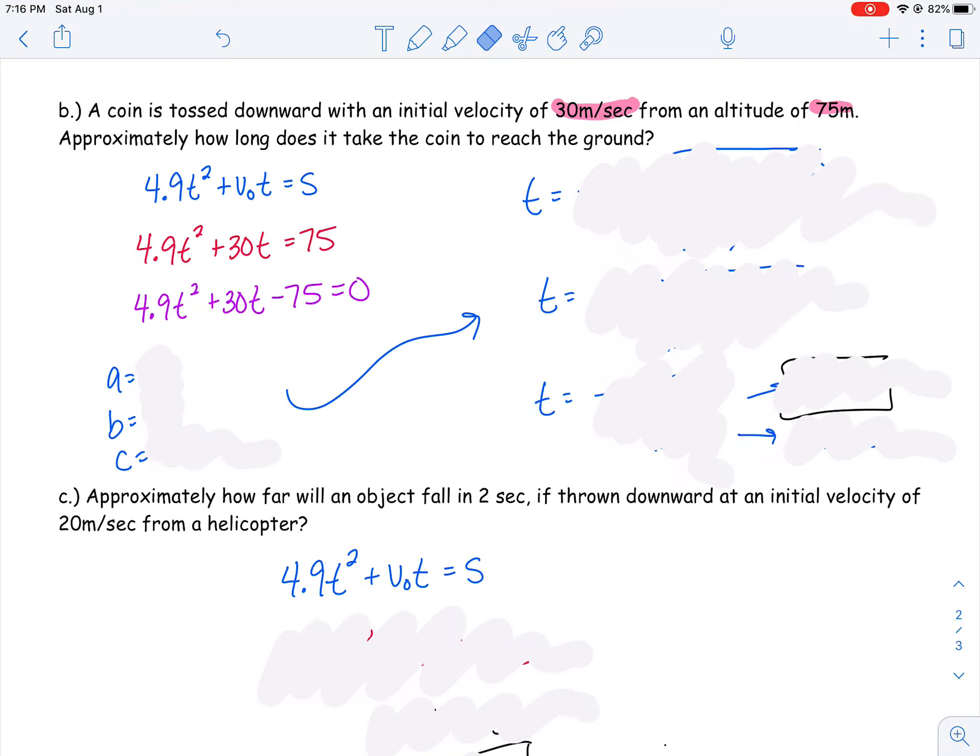I can pick out my a, my b, and my c. a is 4.9, b is 30, and c is negative 75. Now let's plug the a, b, and c into the quadratic formula and simplify. I have negative b plus or minus the square root of b² minus 4ac all over 2a. I've plugged in all my values. Using my calculator and the correct order of operations, I square the 30 first and got 900. I multiply 4 times 4.9 times 75. Those two negatives make a positive 1,470. And 4.9 times 2 is my 9.8 in the denominator.